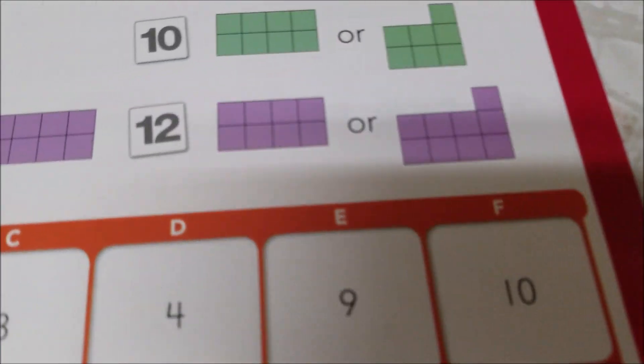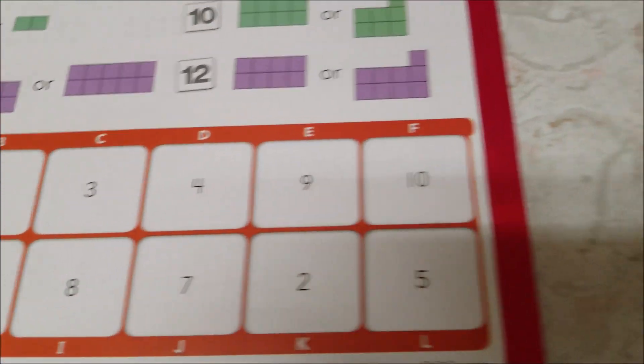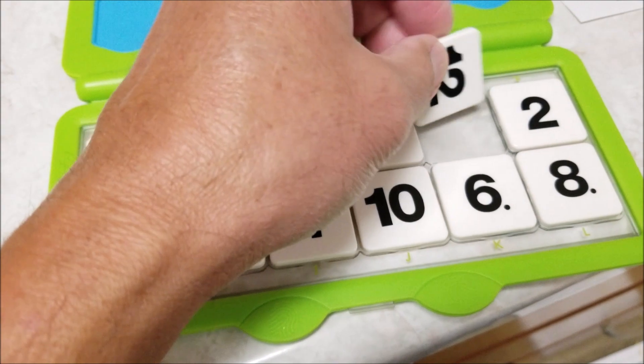And the last one, two, four, six, eight. That's nine, which is E, and it goes right there.